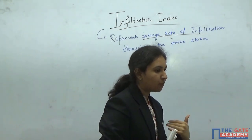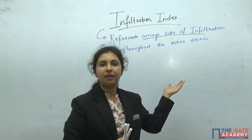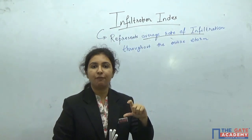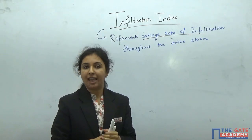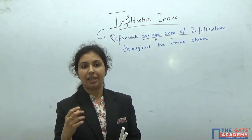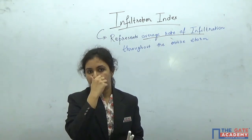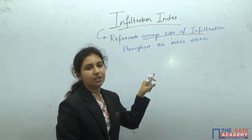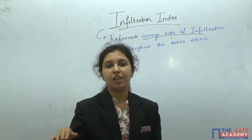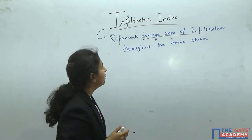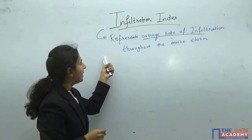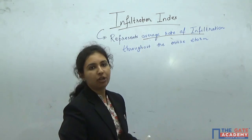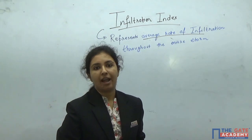What was the problem with Horton's equation? In Horton's equation, we need to calculate F0, FC, and K values, where K is a constant. Instead of calculating all those things, in the infiltration index we assume an average rate of infiltration. So infiltration index represents the average rate of infiltration throughout the entire storm.